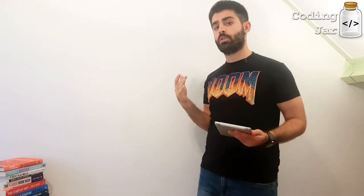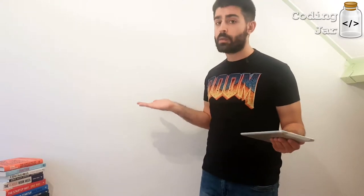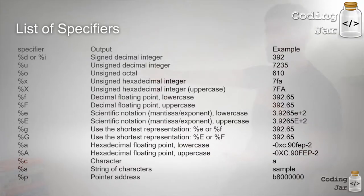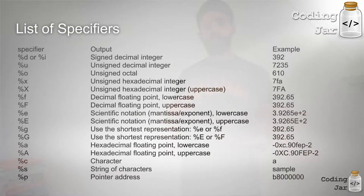There are a lot of different types of variables, so there are a lot of different types of flags. Here, around here, is a table that denotes all those kind of variables. We have the specifiers in the first column, what output this specifier denotes, and an example of what will be printed using this specifier. You can study all this and all material from CodingJar on our website, codingjar.org. I'm not going to dwell too much on this.